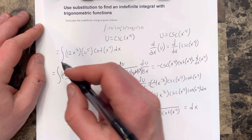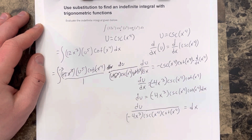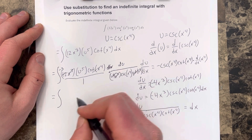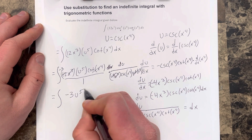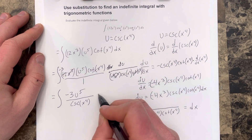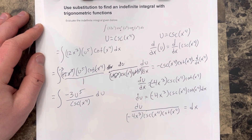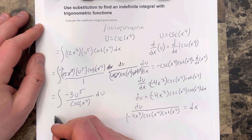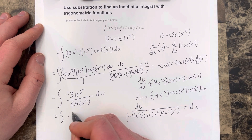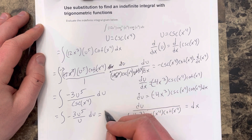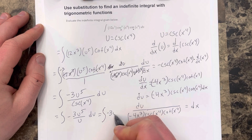So I end up with the integral of negative 3 u to the fifth over cosecant x to the fourth du. Since u equals cosecant x to the fourth, we substitute that back in, giving us the integral of negative 3 u to the fifth over u du, which simplifies to the integral of negative 3 u to the fourth du.